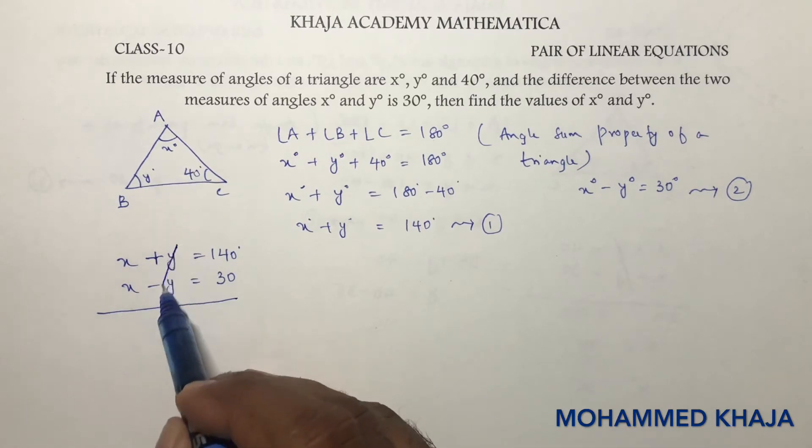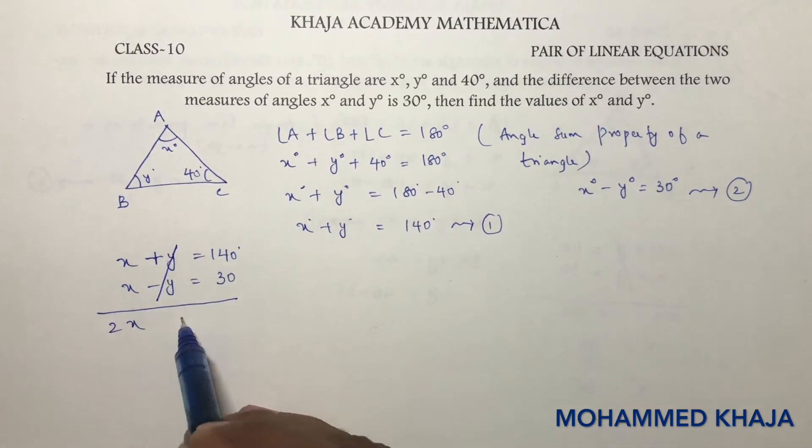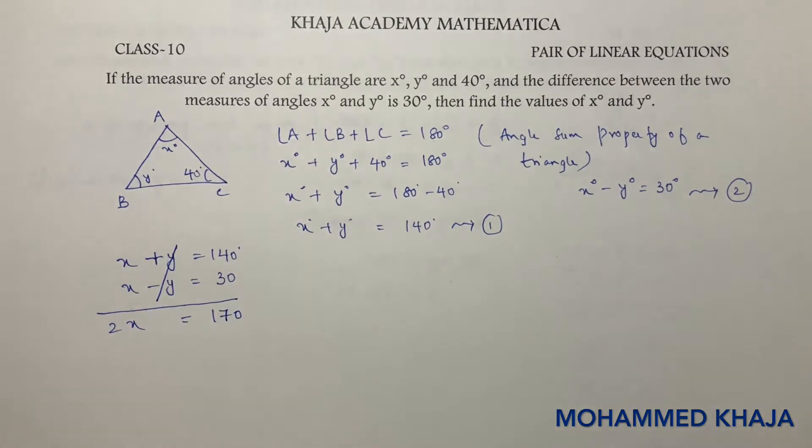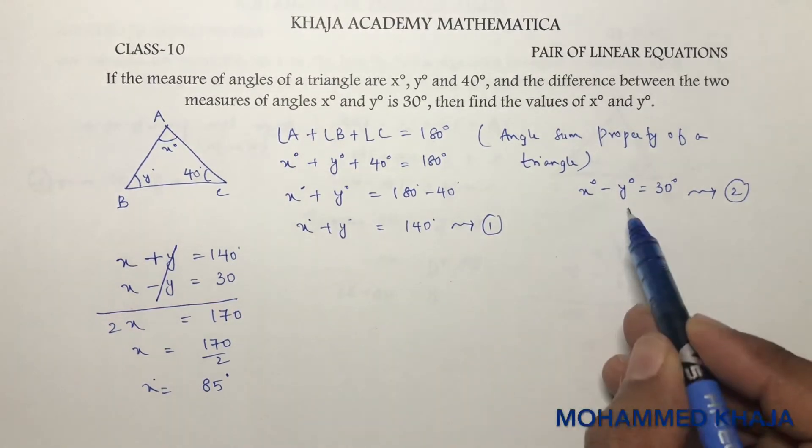When we add them, y and minus y cancel, so 2x equals 170. Therefore, x equals 170 divided by 2. So x equals 85 degrees.